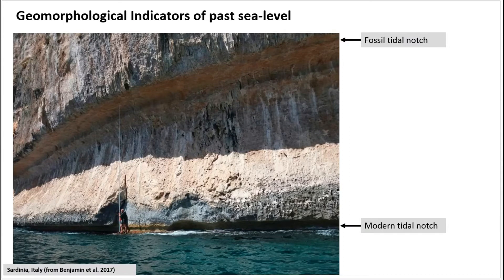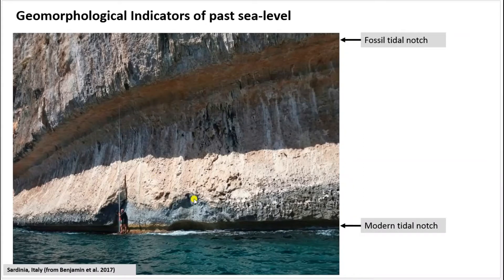For example, you might record geomorphological indicators of past sea level. These show you how sea level has changed over time in the geological past and thus how it may relate to archaeological sites. In this example here we can see sea level used to be much higher in this location, and the sea cut a notch into this former cliff line. We can see the equivalent notch down here at the present. That's the kind of thing you might record in the geoarchaeology resource model.